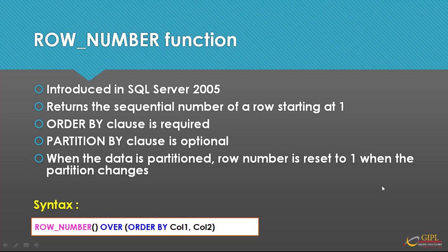Now let's see what the ROW_NUMBER function is. The ROW_NUMBER function is available from SQL Server 2005 and later versions. It returns the sequential number of a row starting at 1. The ORDER BY clause is required. The PARTITION BY clause is optional. When the data is partitioned, the row number is reset to 1 when the partition changes. We first specify the ROW_NUMBER function followed by the OVER keyword, and between the parentheses we use the ORDER BY clause and then the column list by which we want to sort the data.